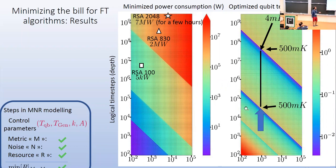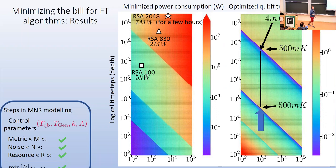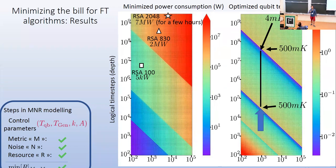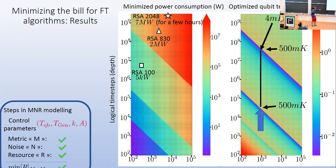On the right we see the optimal qubit temperature. At a point where we just added an extra level of error correction, the optimizer says: you no longer need to maintain your qubit at 10 millikelvin — you can run warmer and save power. As the algorithm gets longer, the qubits must be cooled progressively further, until they reach 4 millikelvin. At that point, the model says it is cheaper to add more physical qubits per logical qubit than to cool further. After adding that error correction layer, the optimizer again allows higher qubit temperatures — less cooling needed since the extra error correction compensates.